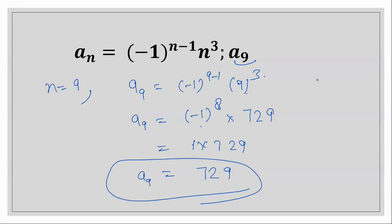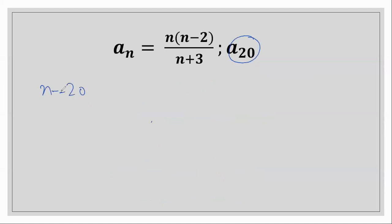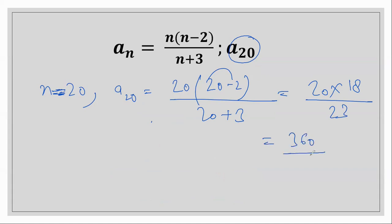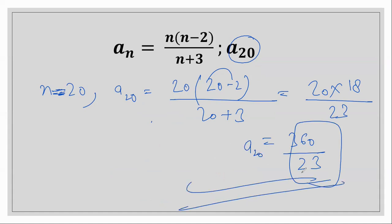The last question is number 10. We have to find a20, so n equals 20. a20 equals (20 minus 2) times (20 plus 3), which is 18 times 23, giving 360 over 23. So a20 equals 360 over 23. That's the final answer for question 10. Thank you everyone.